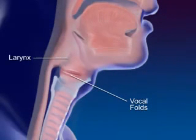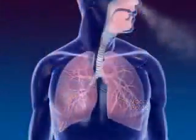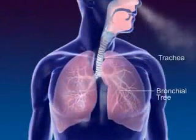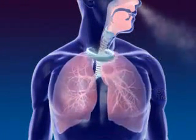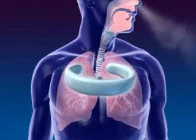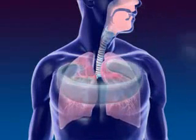The trachea, or windpipe, connects the larynx to the bronchial tree. The cartilage rings of the trachea prevent the trachea from collapsing.